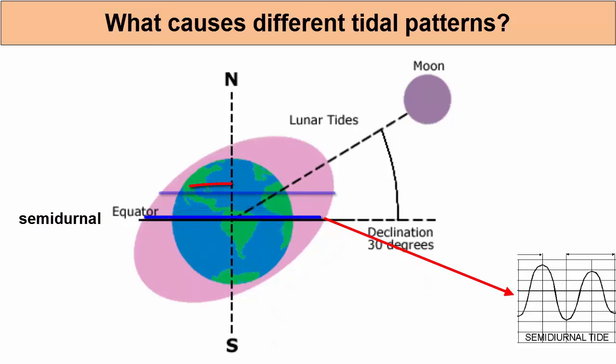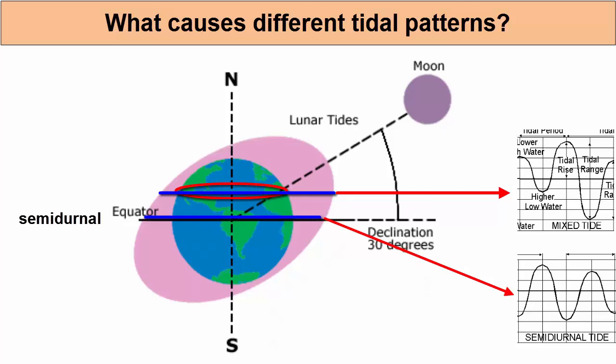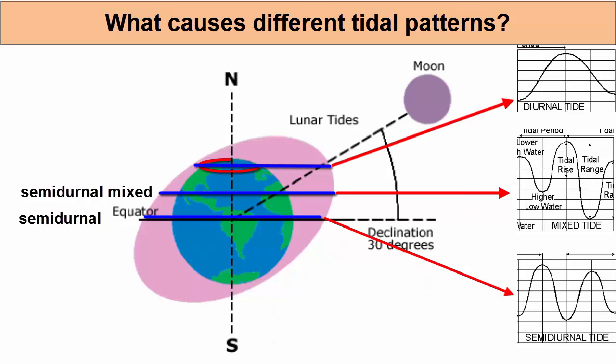If we are at the mid-latitudes, however, we will move through the two bulges, but different parts of them with different water levels. Thus, we experience semidiurnal mixed tides. At the poles, we miss one bulge entirely, so we rotate through only one bulge per lunar day and experience a diurnal pattern.